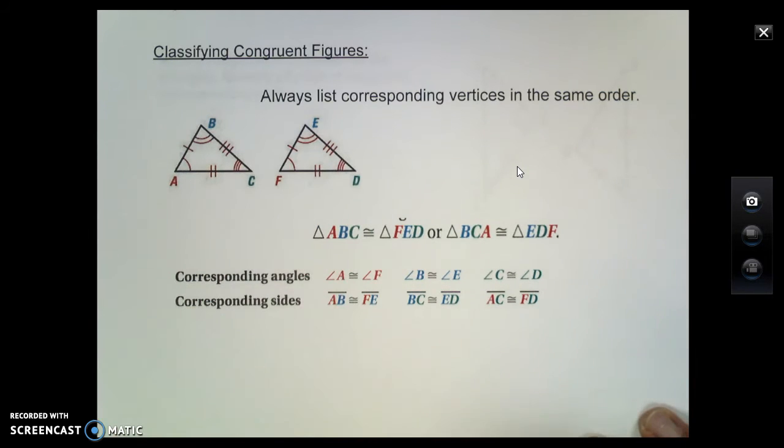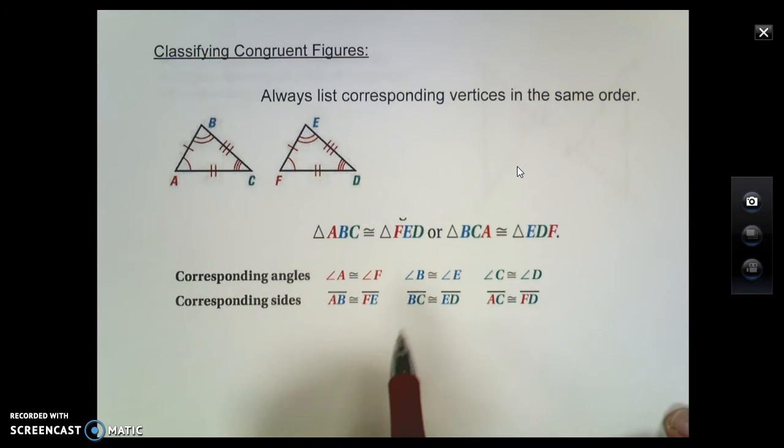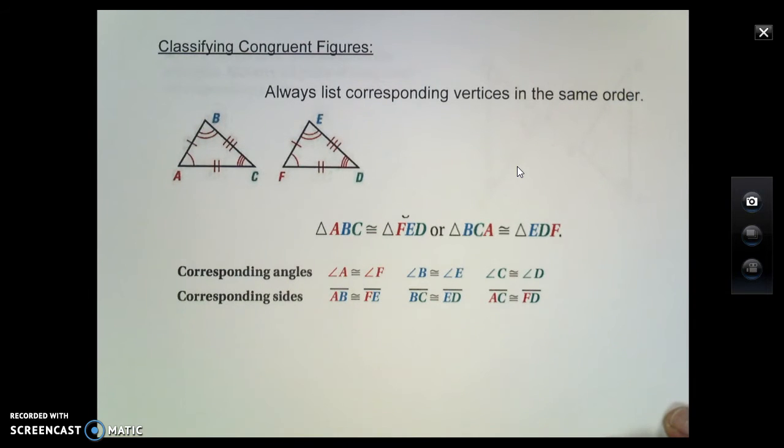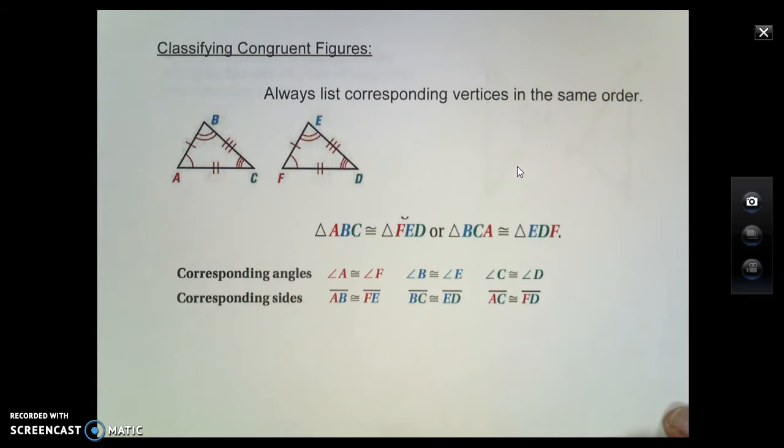Now to label this triangle as congruent, we need to list the corresponding vertices in the same order. So we can't just say, for example, that ABC is congruent to EDF, because A and E, the first two things I said, did not correspond.